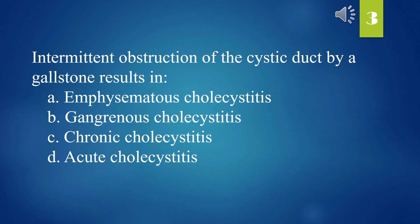Intermittent obstruction of the cystic duct by a gallbladder stone results in: A. Emphysematous cholecystitis. B. Gangrenous cholecystitis. C. Chronic cholecystitis. D. Acute cholecystitis. The answer is C. Chronic cholecystitis.